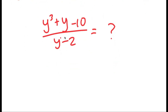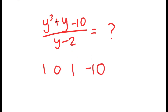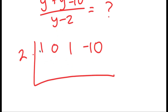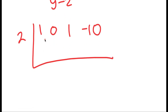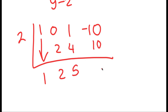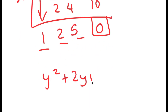So I'm going to divide y cubed plus y minus 10 by y minus 2 using synthetic division. I look at the coefficients of the numerator: 1 (for y cubed), 0 (for y squared, since there's no y squared term), 1 (for y), and negative 10. Using synthetic division with 2: bring down 1; 2 times 1 is 2; 0 plus 2 is 2; 2 times 2 is 4; 1 plus 4 is 5; 2 times 5 is 10; negative 10 plus 10 is 0. So the result is y squared plus 2y plus 5.